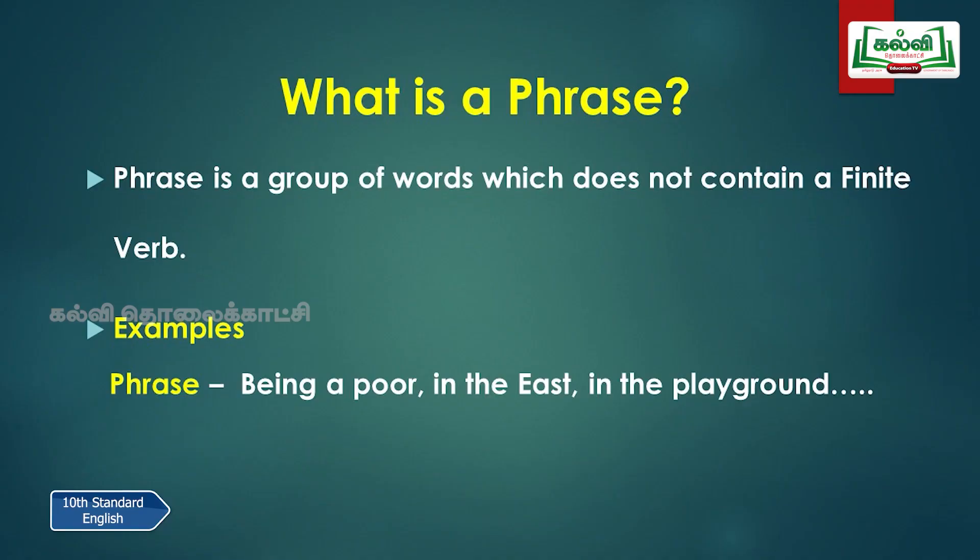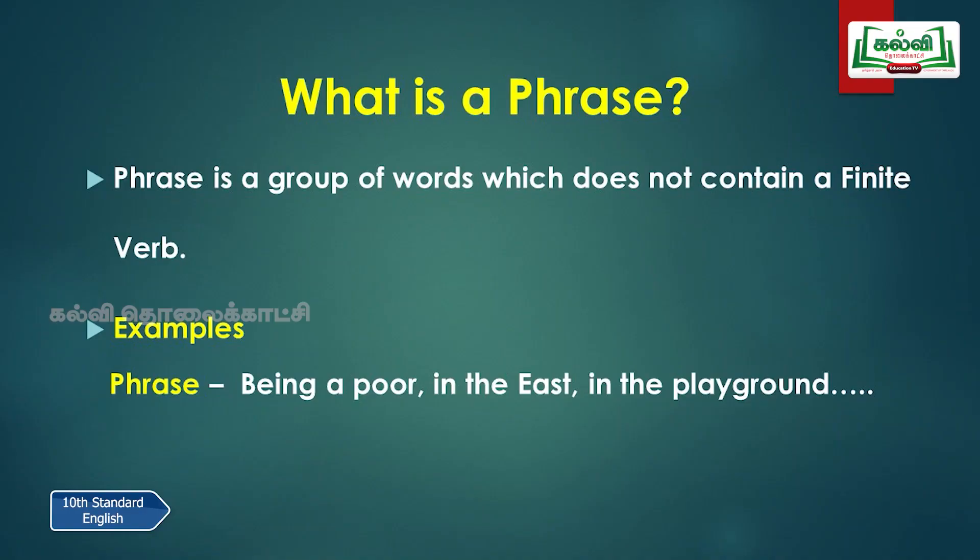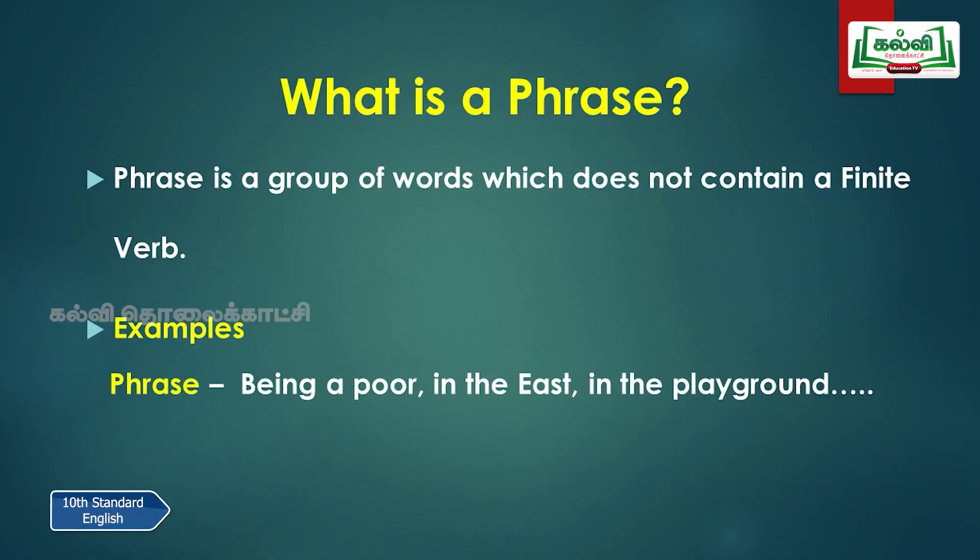For example, 'being a poor' — here we have the verb 'being', but it would not show whether it is present, past, or future. 'In the East' — there is no finite verb, but we have a group of words. 'In the playground' — here also we have a group of words, but it does not have any subject or finite verb. So 'being a poor', 'in the East', 'in the playground' — these will be called phrases.